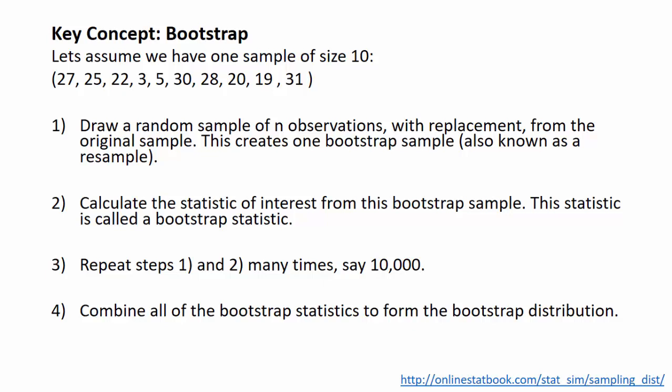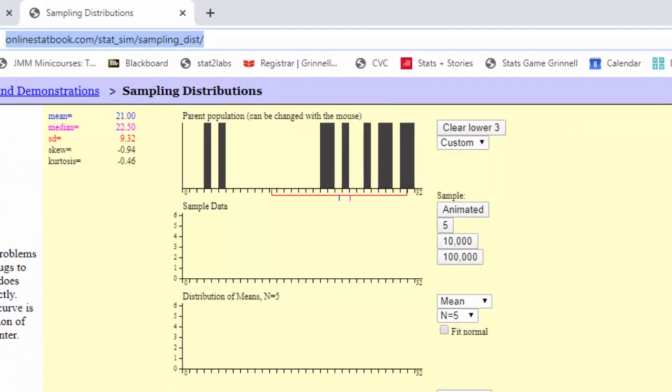So what I'm going to do is follow these same steps that we just talked about. I have this one sample and I'm going to use this one sample to create a bootstrap distribution. Once I have a bootstrap distribution, then I can create confidence intervals.